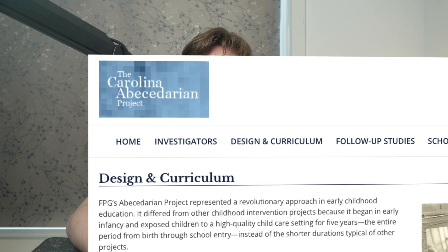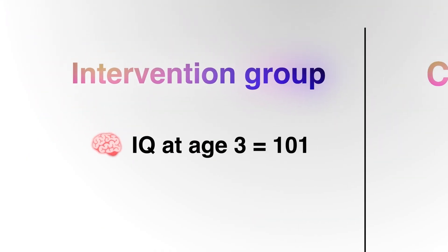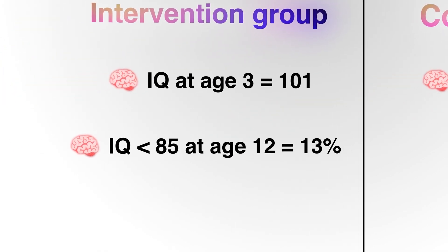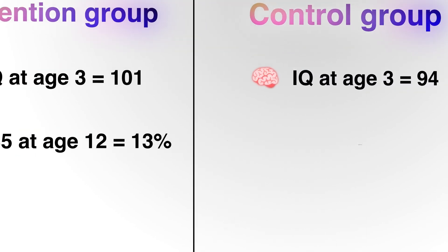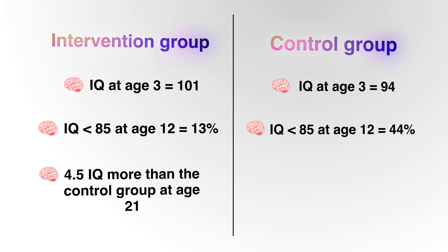We can be sure it's not 100% genes, because when scientists created a program to give working-class children more intellectual stimulation, it actually increased their IQ and grades. One notable study called the Abecedarian Program set out to give 111 at-risk children intensive preschool education — at-risk meaning their mothers had an IQ of 85 or less. Teachers conducted daily classes for groups of three to six children from age six months until kindergarten. After observing those children for more than 20 years, at age 3 the children in the program had an average IQ of 101, compared to 94 in the control group. By age 12, only 13% of the intervention kids had an IQ below 85, compared to 44% in the control group. At age 21, those with the intervention had 4.5 IQ points more than the control.